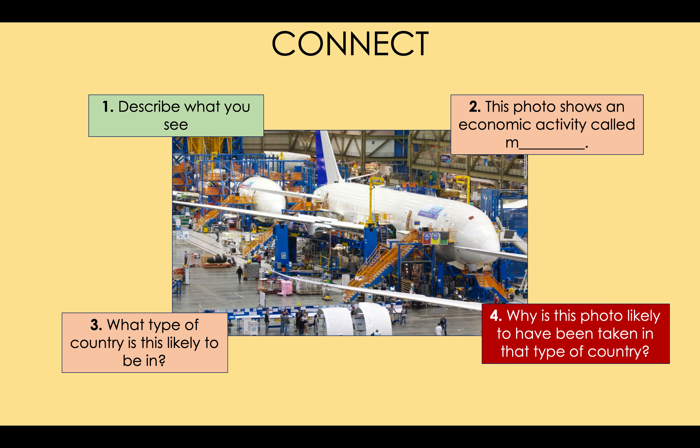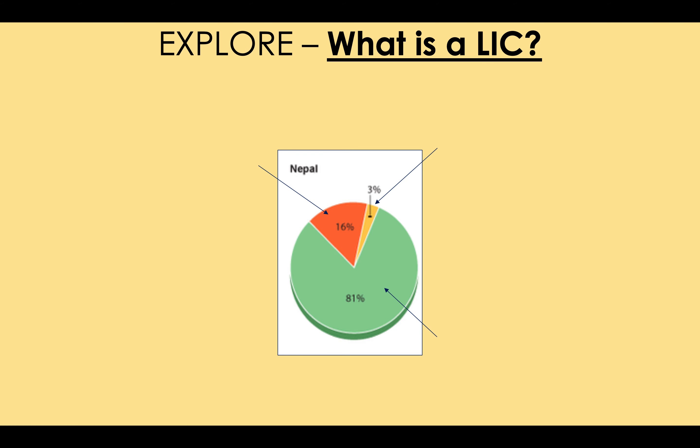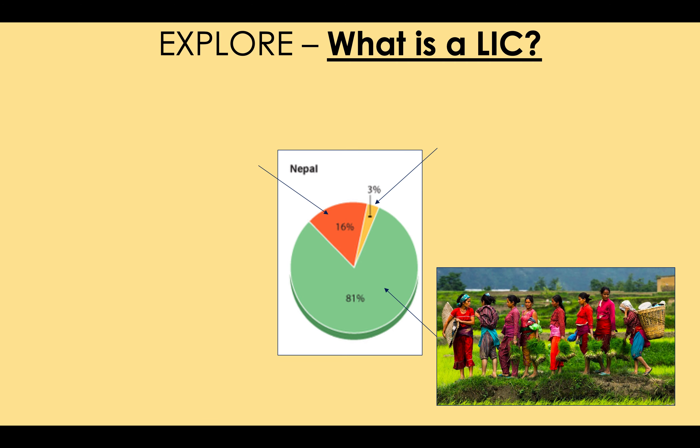So what does this have to do with today's topic? Today I'm going to show you how different activities are done in different types of country — the jobs people do in HICs, NEEs, and LICs are very different. Let's start at the bottom of the chain. We think of development as a ladder; at the bottom are LICs. Look at this pie chart of Nepal, a typical LIC in South Asia. The green section is by far the largest — in Nepal, most people are farmers and manual labourers who use their hands and don't have many machines. It's hard, tiresome work. This is called the primary sector — farming and mining.